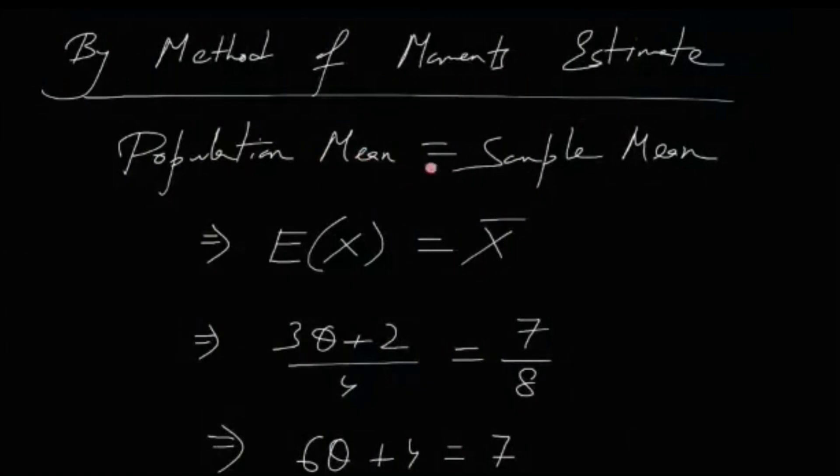This part is obviously theta since this is a normal distribution with parameters theta and 1. So ultimately it's nothing but (3θ + 2)/4. The sample mean is nothing but 1/4 times the sum of the values which is 7/8.